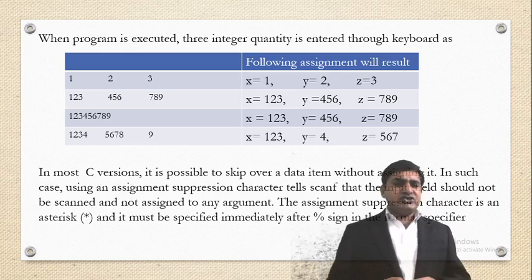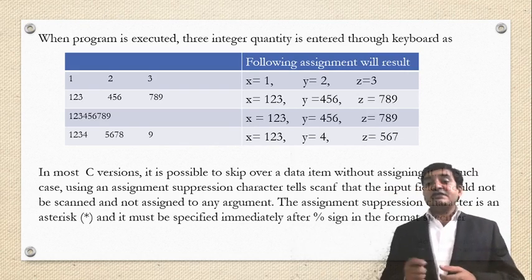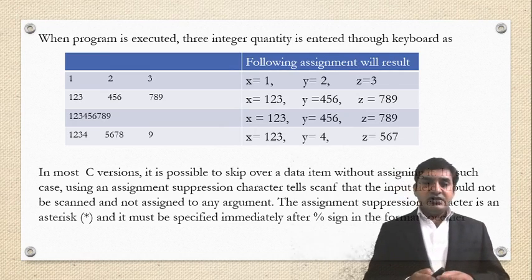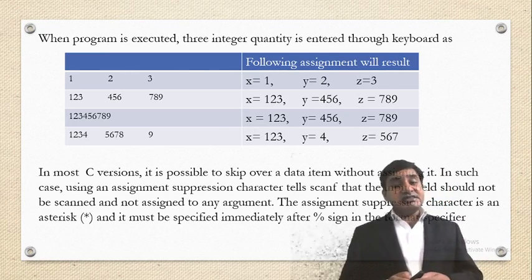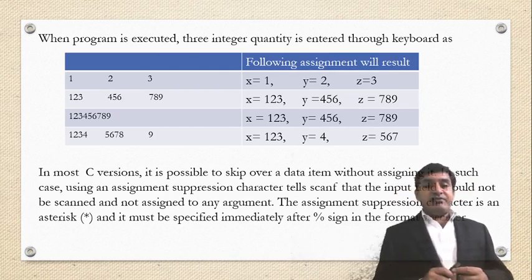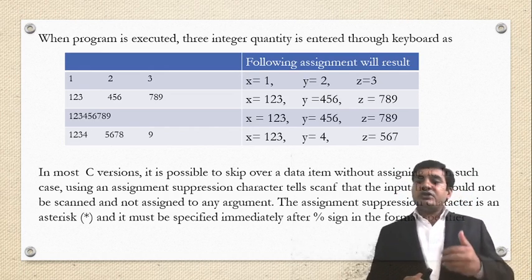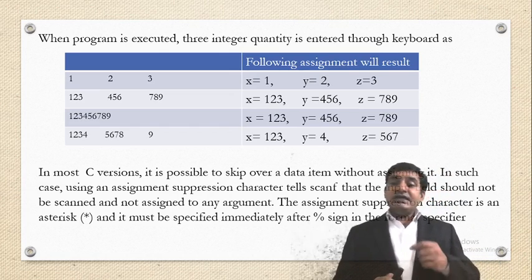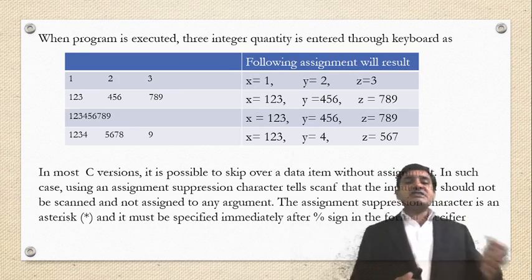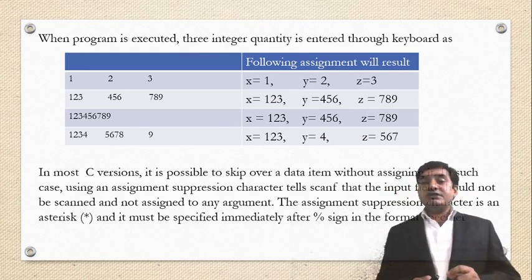In most C versions it is possible to skip over a data item without assigning it, using an assignment suppression character. This tells scanf that the input field should not be scanned and not assigned to any argument. The assignment suppression character is an asterisk (*) and it must be specified immediately after the % sign in the format specifier.